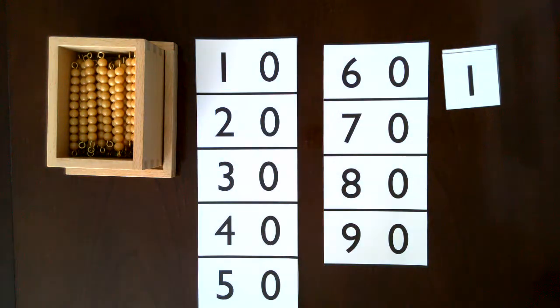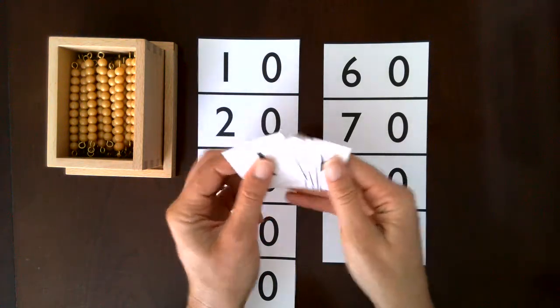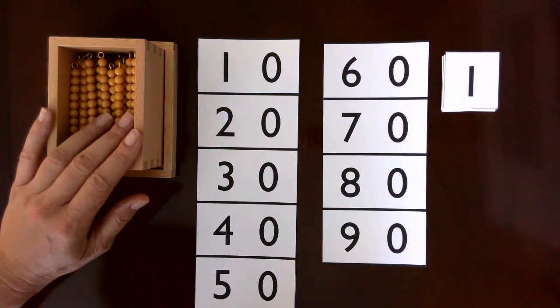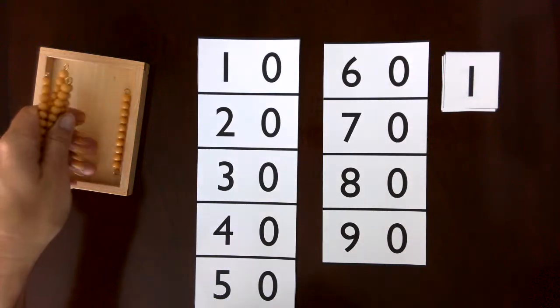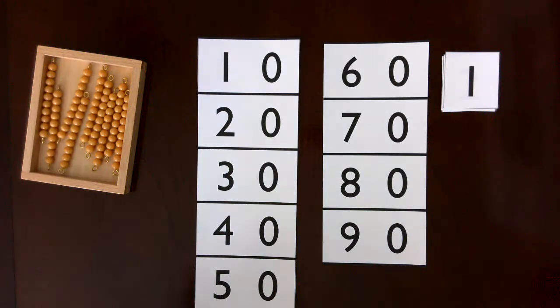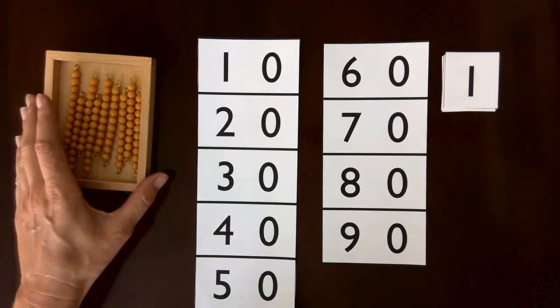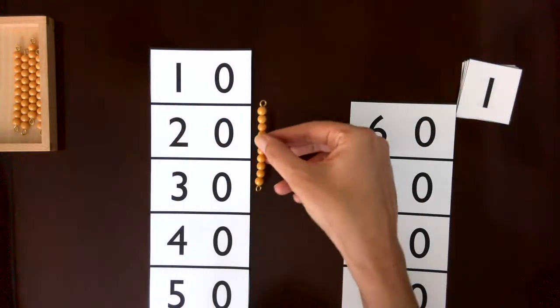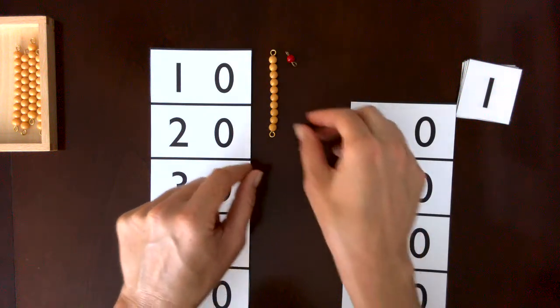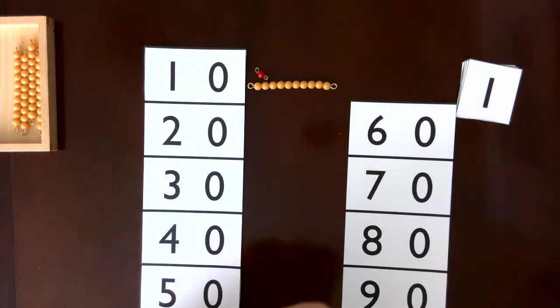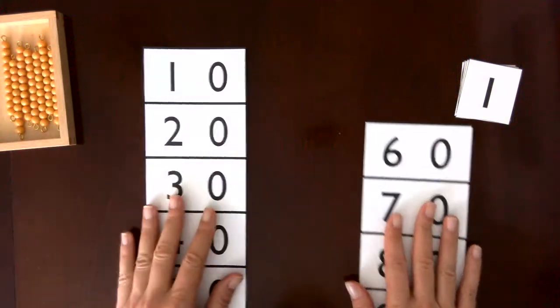For this activity you should have a Seguin ten board and the loose numerals one through nine. You should have exactly nine ten bars—I have too many here—and then exactly nine of the single units, but again I need to be using the colored bead bars. One more thing: usually the beads are vertical so that they are going in the same direction as the numerals, but I'm going to be having them go this way so that they fit better with the card.